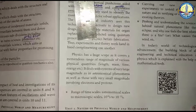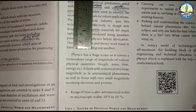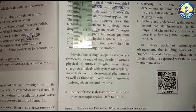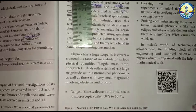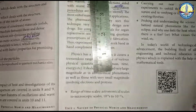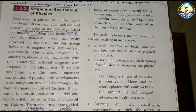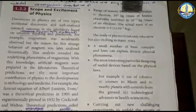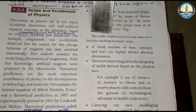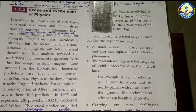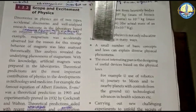If we look at the scope of physics, it covers various physical quantities such as mass, time, and energy — ranging from astronomical phenomena down to electrons and protons. The range of masses studied in physics spans from heavy astronomical objects to the electron, covering up to 10 to the power of 55 kg. Physics is very exciting because a small number of basic concepts and laws can explain diverse physical phenomena.